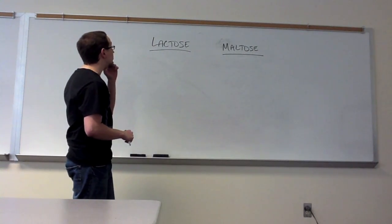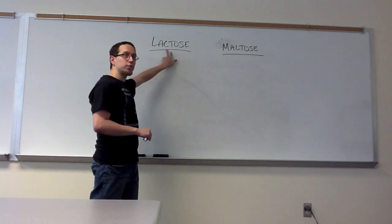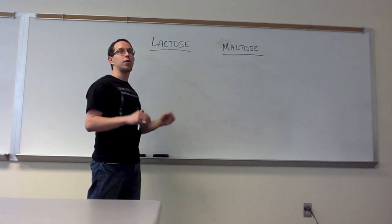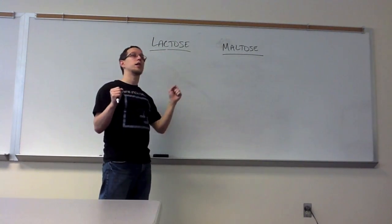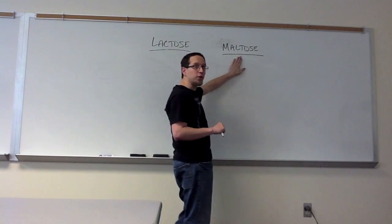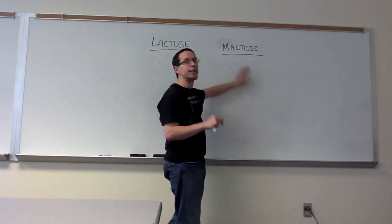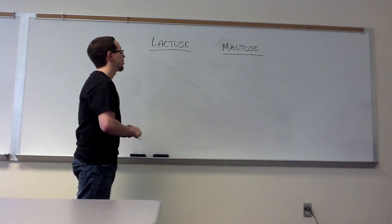The big difference is that the two monosaccharides that are linked by glycosidic linkage to make lactose are galactose and glucose, while with maltose it's two glucose molecules.